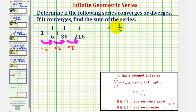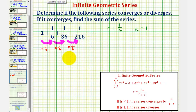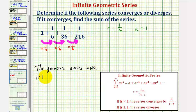Because the absolute value of R is less than 1, the series will converge, and the sum converges to A, the first term, divided by the quantity 1 minus R. The absolute value of R here equals the absolute value of 1/6, which equals 1/6, which is less than 1 — so the series converges.